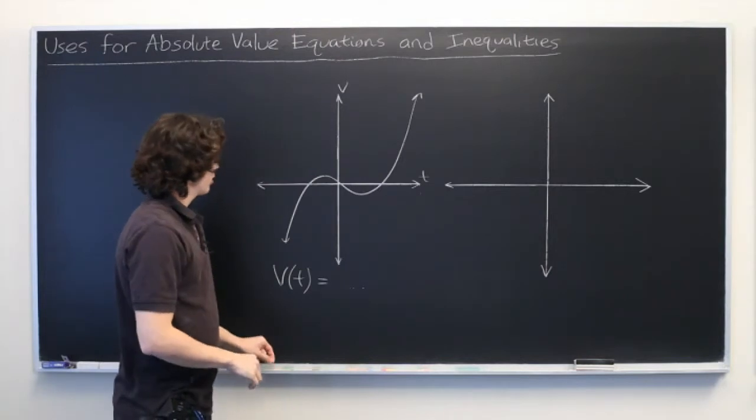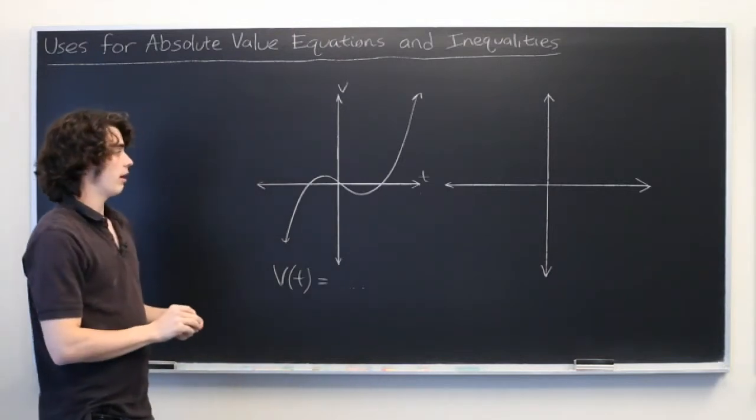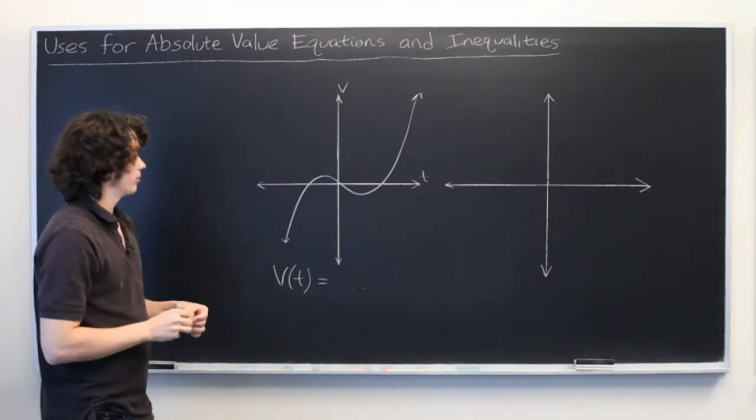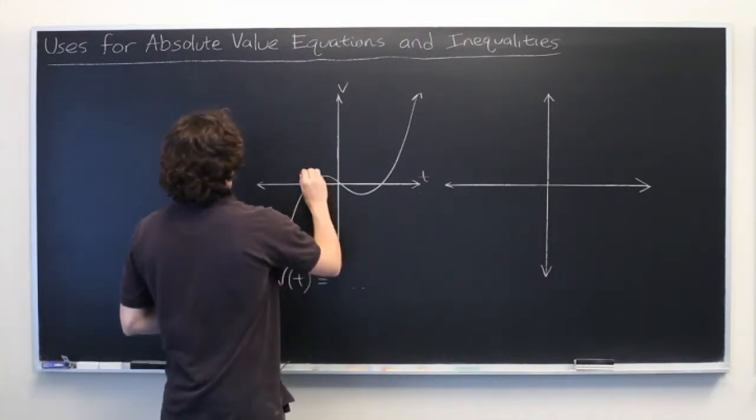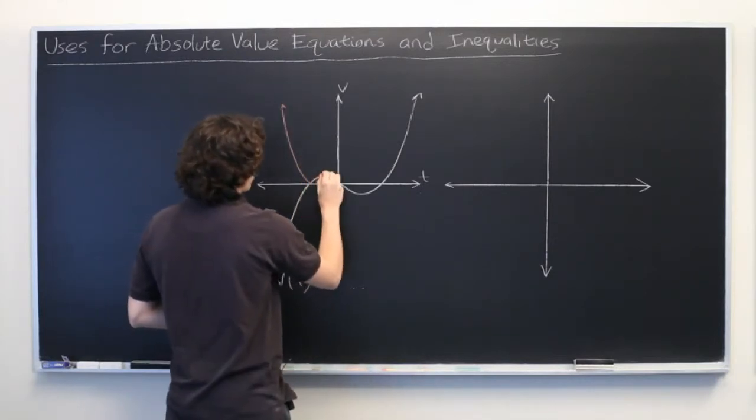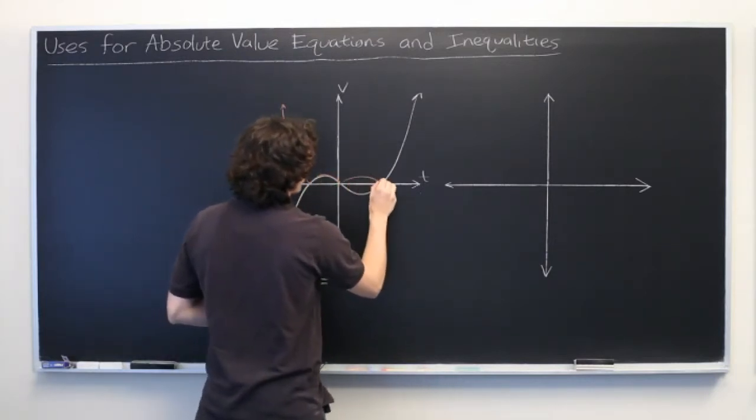What we could use to represent the speed of the car, not the velocity, is the absolute value of this function. Where we take all values and make them positive. Like so.